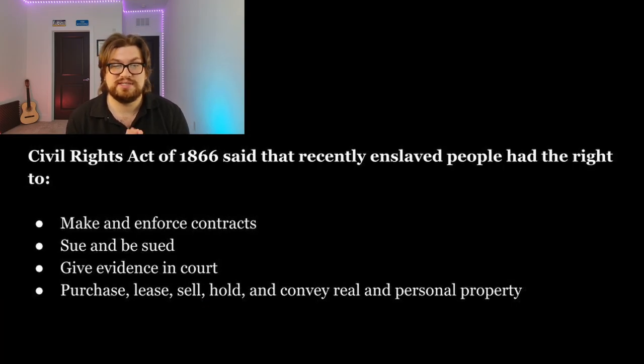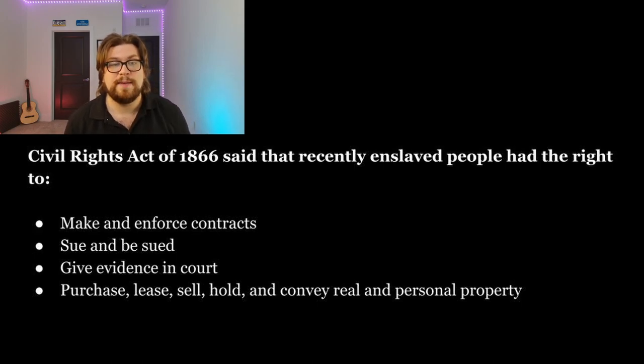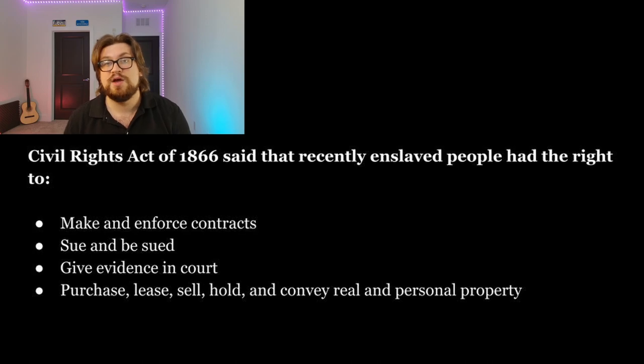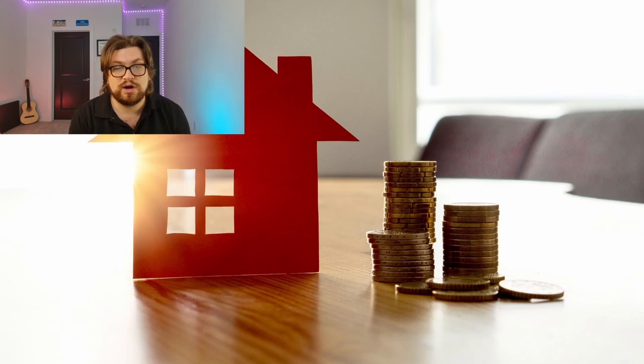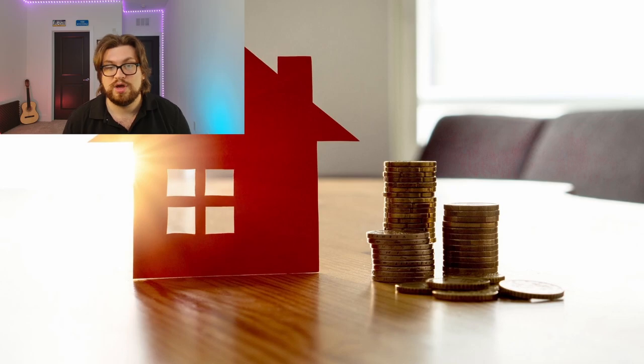The Civil Rights Act of 1866 said that recently enslaved people had the right to do four things: one, make and enforce contracts; two, sue and be sued; three, give evidence in court; and four, purchase, lease, sell, hold, and convey real and personal property. Among the many benefits of this act, one of the most important was that any person born in the United States could own property regardless of their color or race. This new law greatly impacted the real estate world, opening the door for conversations about fair housing and housing discrimination.